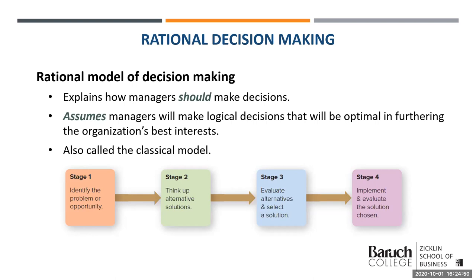The rational model of decision-making is really about how managers should make decisions. It assumes that managers make logical decisions that will be optimal for their organizations' best interests. There's a logical process of deduction based on assumptions the manager knows to be true, and the manager arrives at a solution deemed the optimal choice — the best choice among all alternatives. This is basically how we think people make decisions in daily life.